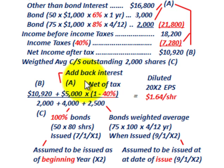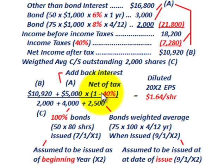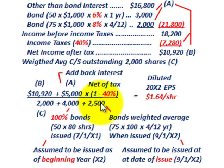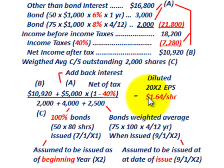Putting it all together: the numerator is $10,920 + $3,000 (after-tax interest add-back), and the denominator is 2,000 + 4,000 + 2,500 = 8,500 shares. Dividing gives us the diluted earnings per share for 20X2 of $1.64 per share.